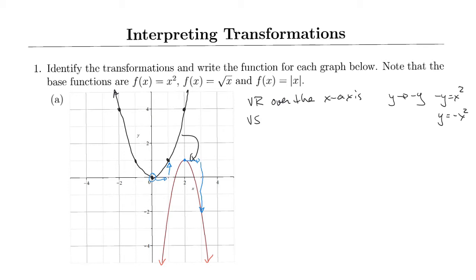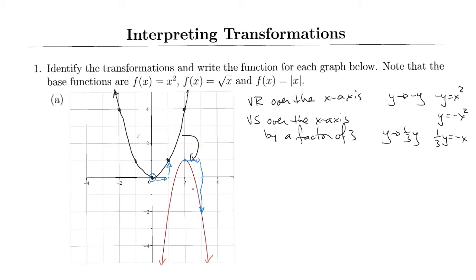That implies there has been a vertical stretch by a factor of three. I could have interpreted that as a horizontal stretch, but this is much easier — I go one unit over and three units up to get back onto the graph. That is a vertical stretch over the x-axis by a factor of three, which means I'm replacing y with one-third y. So one-third y equals negative x squared, and I bring that three up — y equals negative 3x squared.